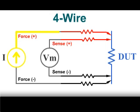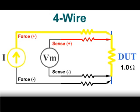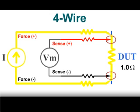In this case, no current flows through the voltmeter or sense leads, so you get a true resistance measurement from the point where the force and sense leads come together.